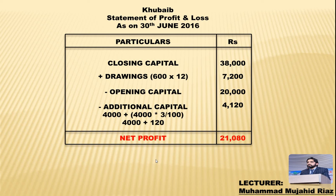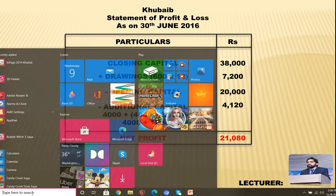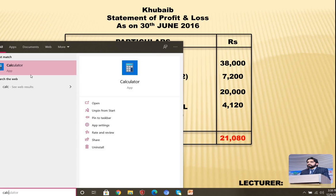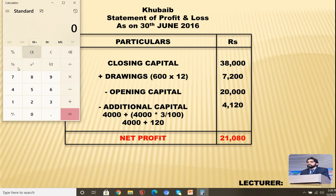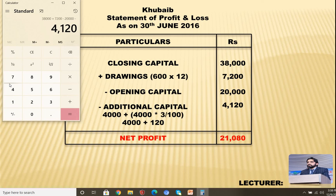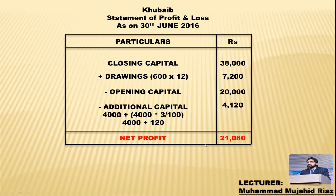آپ کے سامنے calculator open کرتا ہوں۔ Calculator پہ لکھتے ہیں: 38,000 + 7,200 − 20,000 − 4,120۔ Enter کرتے ہیں تو answer آتا ہے: 21,080۔ ہم نے پہلے کہا تھا کہ اگر positive answer آئے تو اسے net profit مانیں گے۔ تو اکیس ہزار اسی روپے ہمارا net profit ہے — یہ ہمارے question کا answer ہے۔